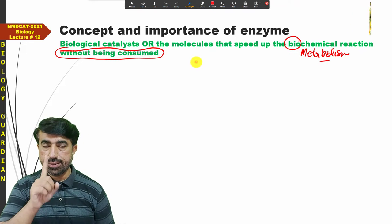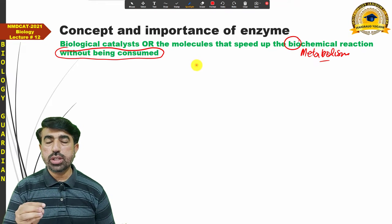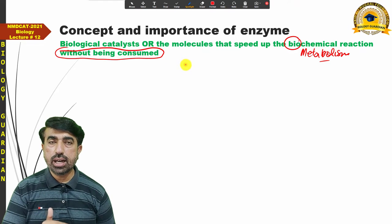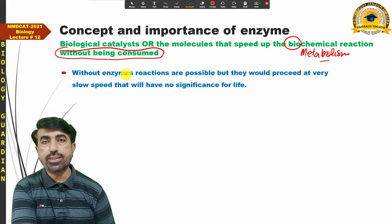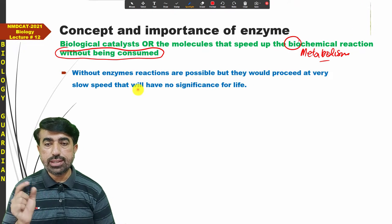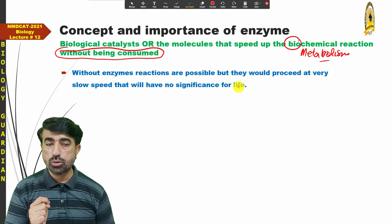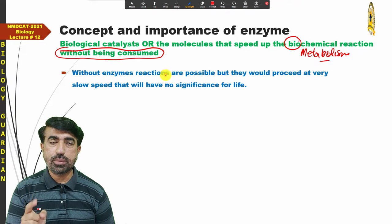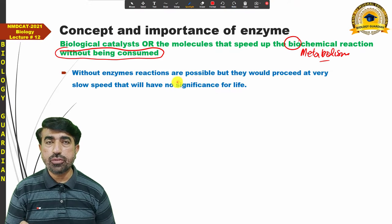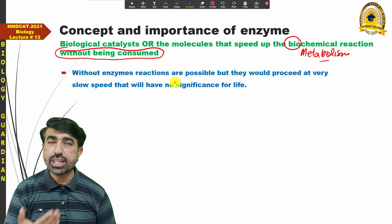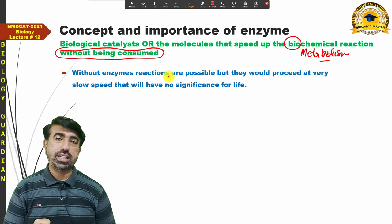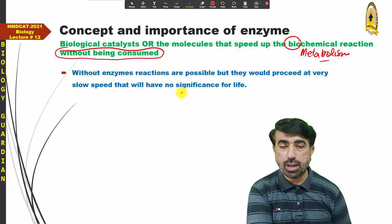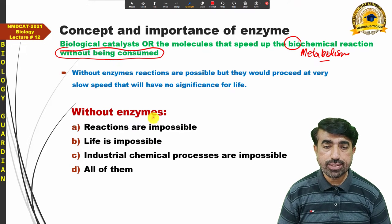So we understand that reactions are possible without enzymes, but they would be so slow that they would have no significance for life. Without enzymes, reactions proceed at a very slow speed that they will have no significance for life. Therefore, without enzymes, survival is not possible — enzymes are needed for survival.